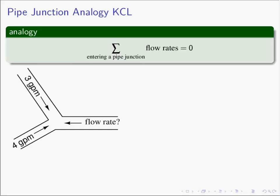Here we have three pipes coming together. The flow rate coming down in one direction is three gallons per minute, and we have a flow rate going in another direction which is four gallons per minute. The question is: what is the flow rate in the pipe going to the left? Maybe this represents the sewage pipes in your house — the upstairs toilet producing three gallons per minute and the downstairs toilet producing four gallons per minute — and we need to find the flow rate in the pipes underneath the house.